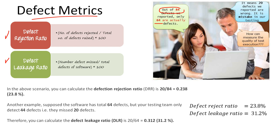Here we have a formula. Defect rejection ratio: number of defects rejected divided by total number of defects we raised, times 100. Similarly, defect leakage ratio: number of defects we missed divided by total defects in software, times 100.